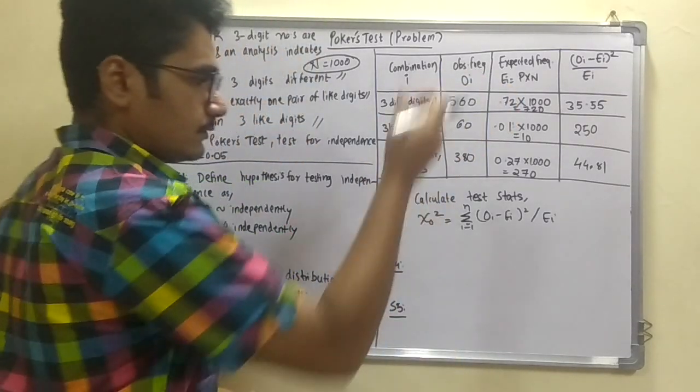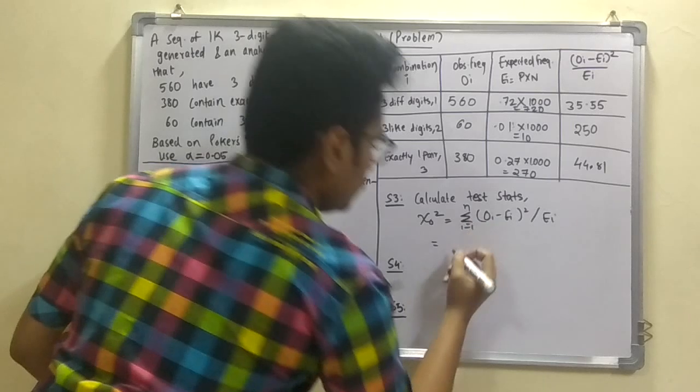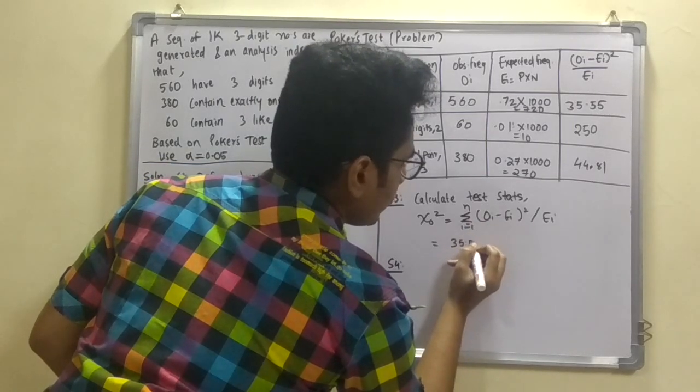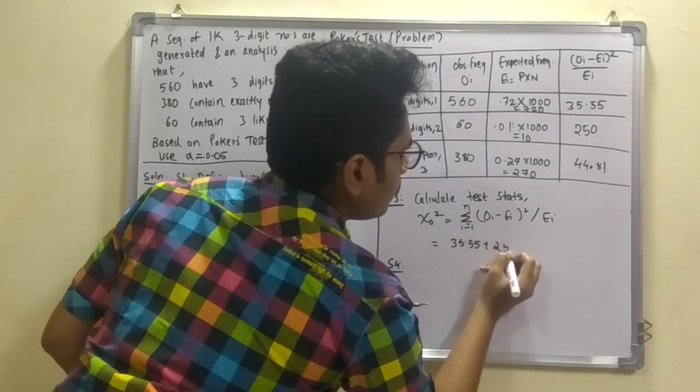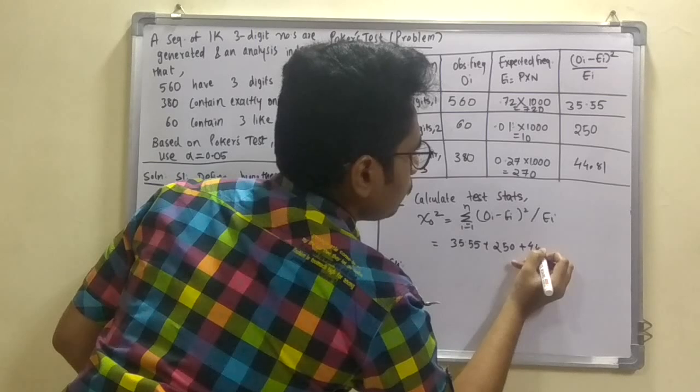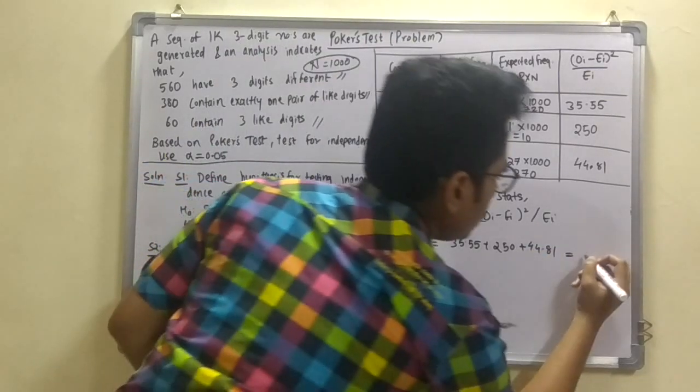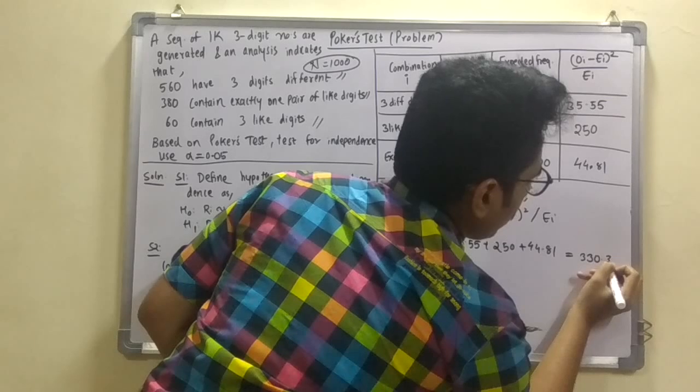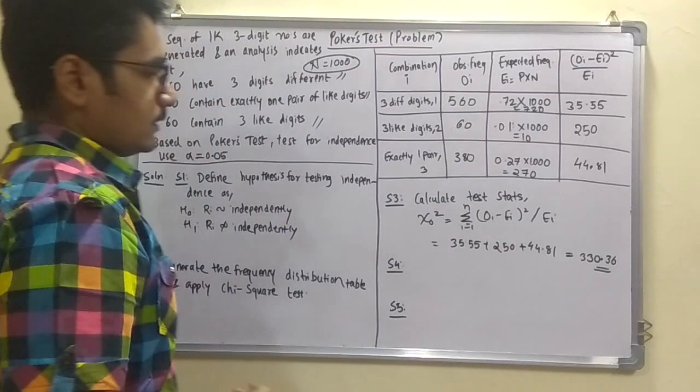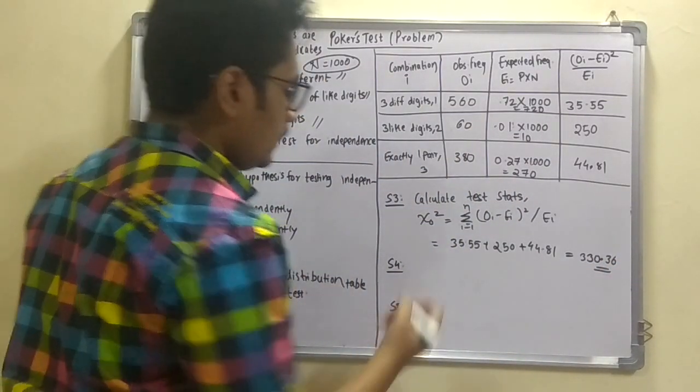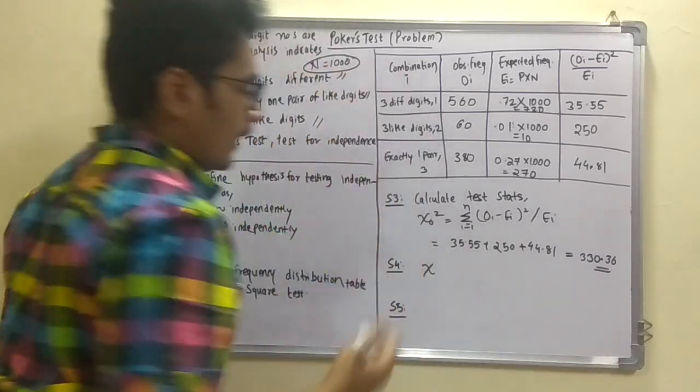So we have to calculate the test statistics. So just you have to add all these three. That is 35.55 plus 250 plus 44.81. So the answer comes around some 330.36 you get from this.